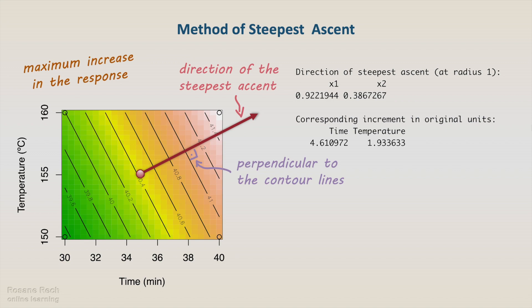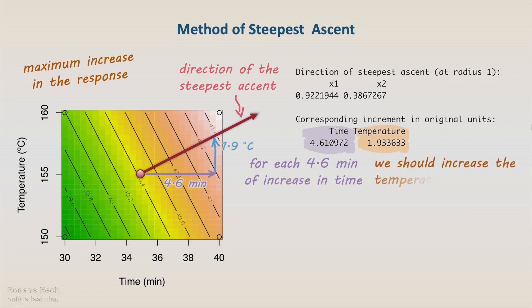The information in the RSM output tells us the relative variation between the two factors being studied. To follow the path of the steepest ascent in this design, for each 4.6 minutes of increase in time, we should increase the temperature by 1.9 degrees. The mathematical form is delta temperature equals 1.9 divided by 4.6 times delta time.